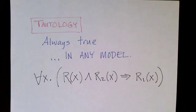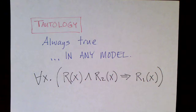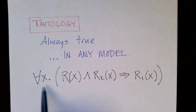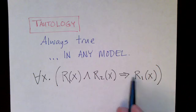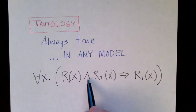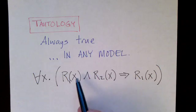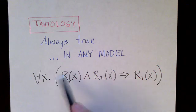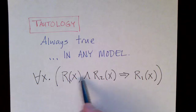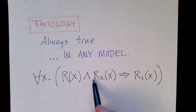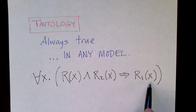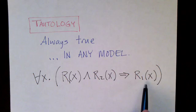There's a special case for true statements: some statements are true in any model. If a statement is true regardless of what model or interpretation you have for the relation symbols, that statement is said to be a tautology. For example: for all x, if R1 is true of x and R2 is true of x, then R1 is true of x. This is always true regardless of what x is or what relation R1 stands for, because it follows purely from the meaning of our logical operators. It's saying that if R1 is true and some other stuff, then R1 is true — which is clearly always the case. So this is a tautology; it doesn't matter what the model is.